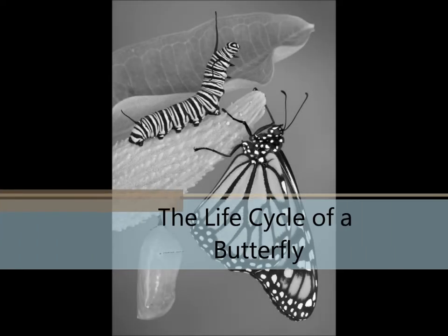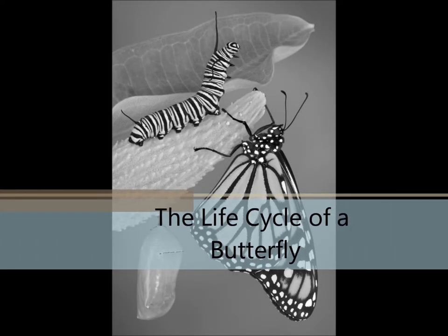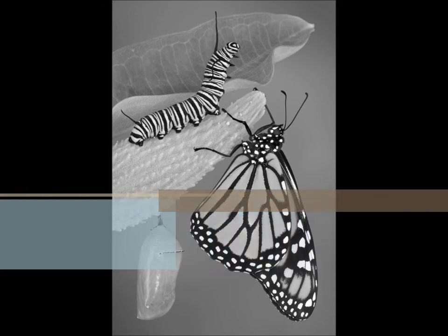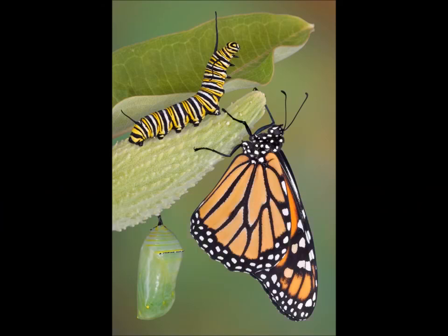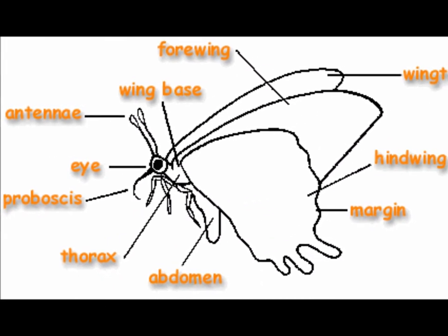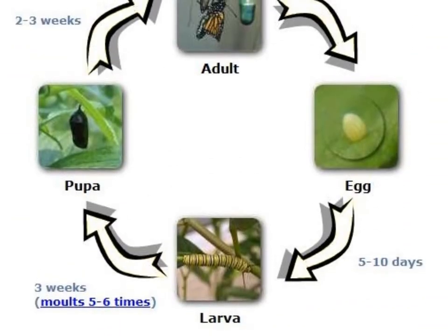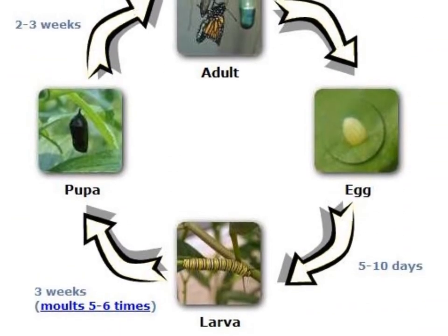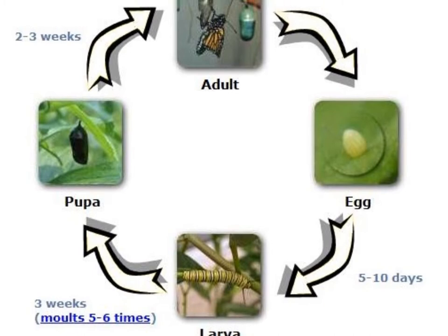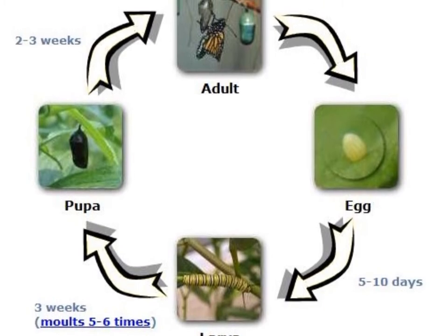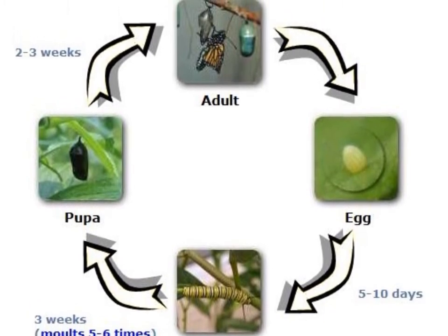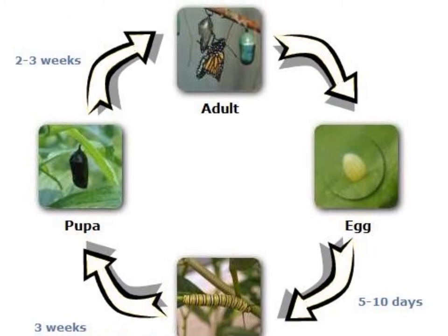The Life Cycle of a Butterfly. Today we'll be exploring the four stages that a caterpillar goes through in order to become a butterfly. In this image you will see the end result. This image shows us the growth of a caterpillar into a butterfly as a cycle, because as you can see, we will return to the beginning at the end of all four stages.